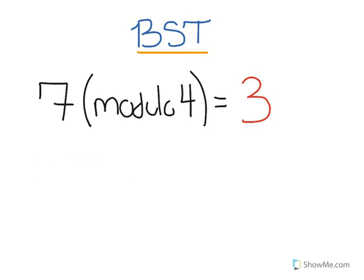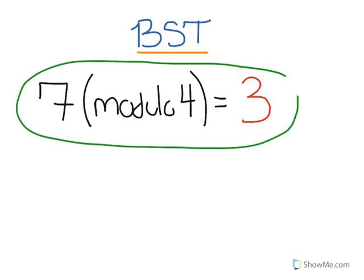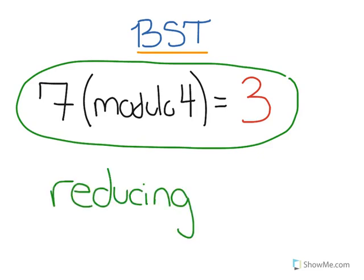This process of taking a number and representing it modulo another number is called reducing. So here we're reducing 7 modulo 4 to get 3.